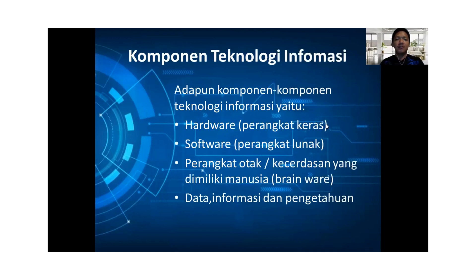Komponen dari teknologi informasi yaitu yang pertama hardware atau perangkat keras, di mana perangkat keras bisa berupa komputer, printer, scanner, dan lain-lain. Untuk software sendiri bisa berupa aplikasi seperti Microsoft Word, Office, Photoshop, dan lain-lain. Kemudian perangkat yang dimiliki manusia ini bisa disebut sebagai brainware, kemudian data, informasi, dan pengetahuan.